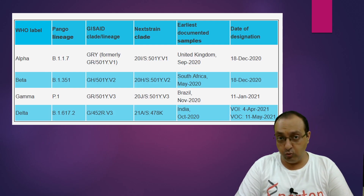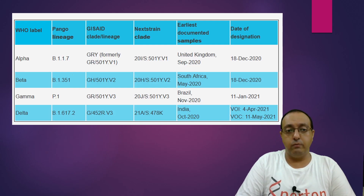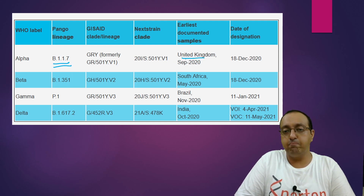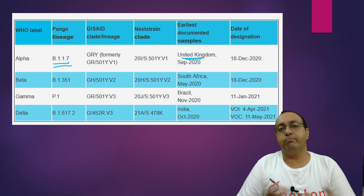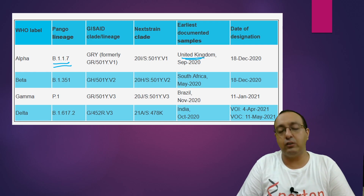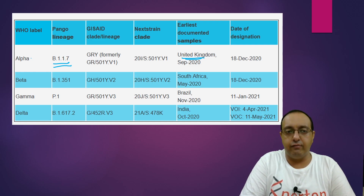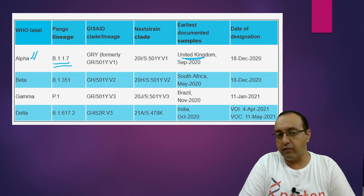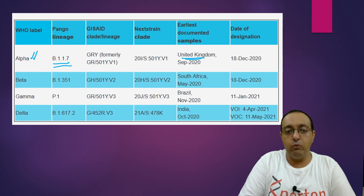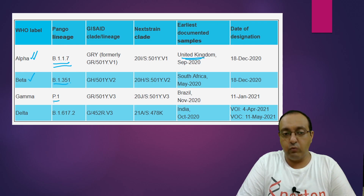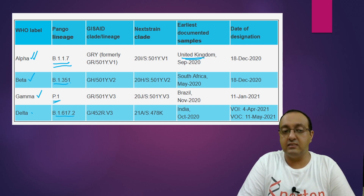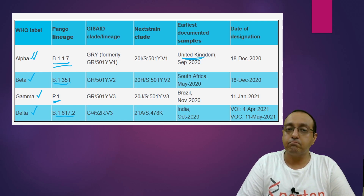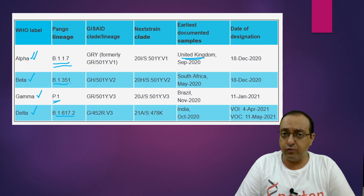These are the new nomenclatures: B.1.1.7, previously identified in the UK and called the UK or Kent variant, is now labeled Alpha. B.1.351 is Beta. P.1 variant is Gamma. And B.1.617.2 is Delta.